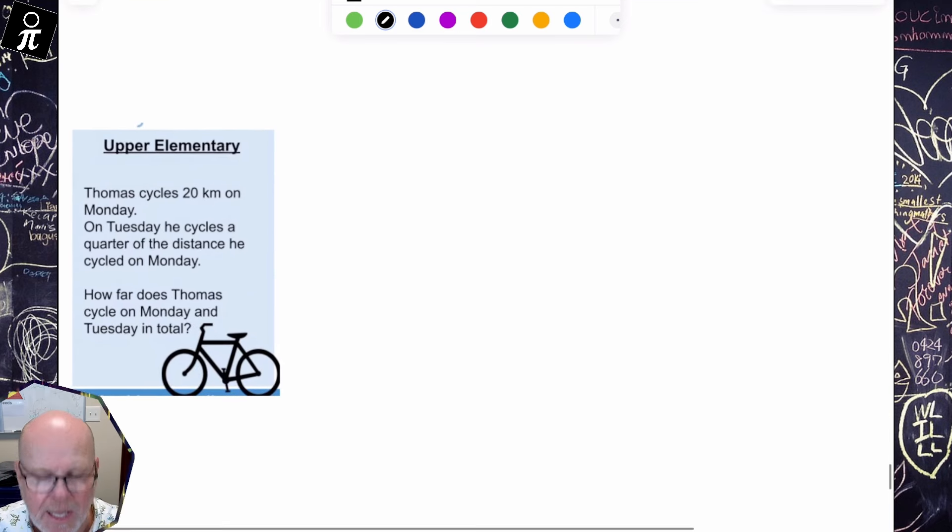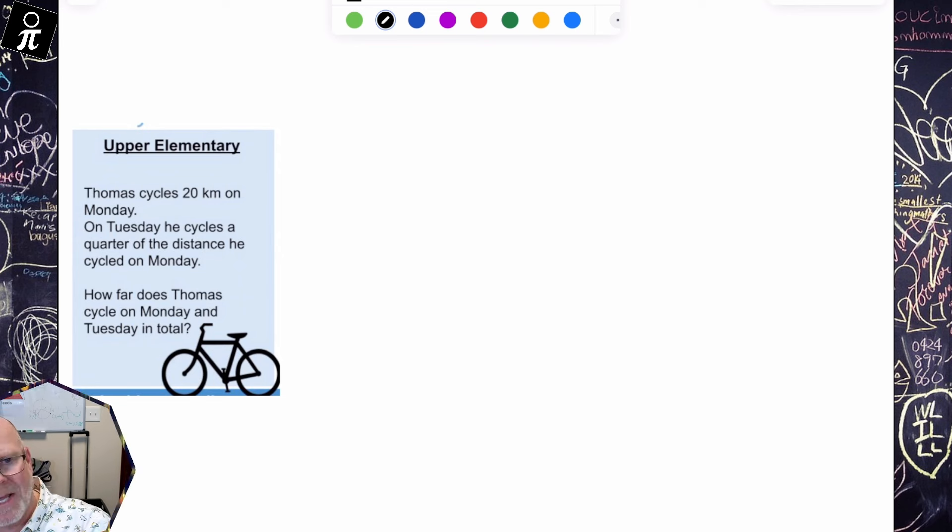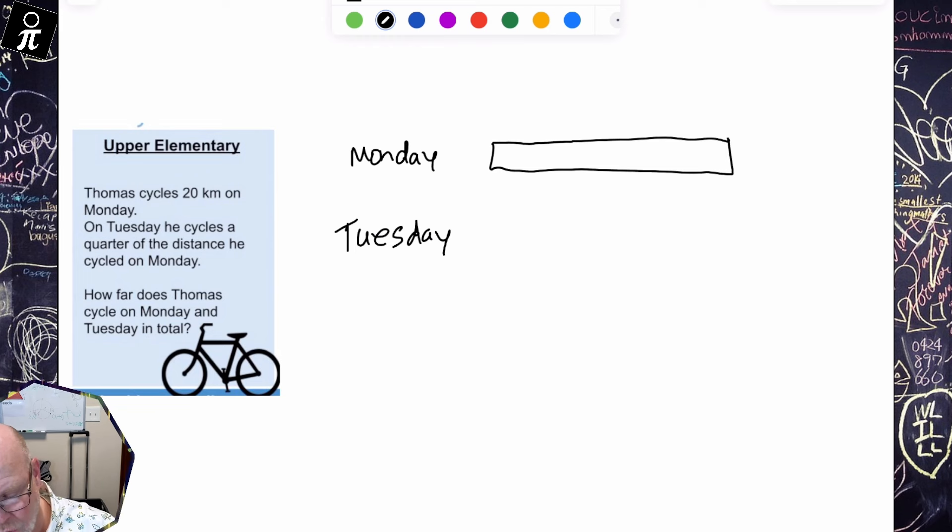So there's your model right there. Let's take a look at upper elementary. Thomas cycles 20 kilometers on Monday. On Tuesday he cycles a quarter of the distance he cycled on Monday. How far does Thomas cycle on Monday and Tuesday in total? So this to me is going to be a two-bar tape diagram, because my two subjects are Monday and Tuesday.